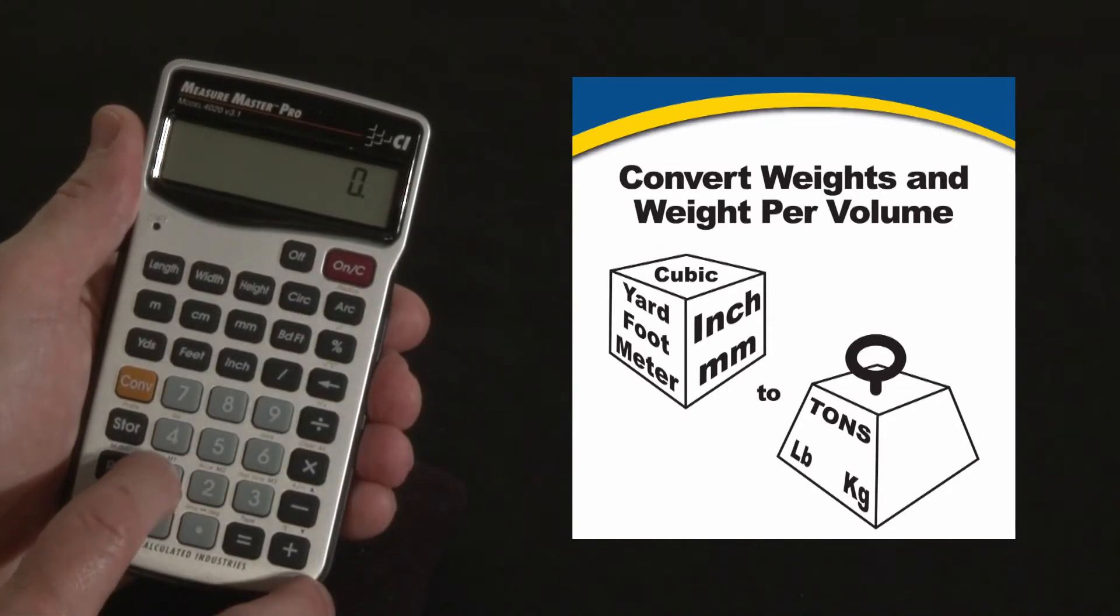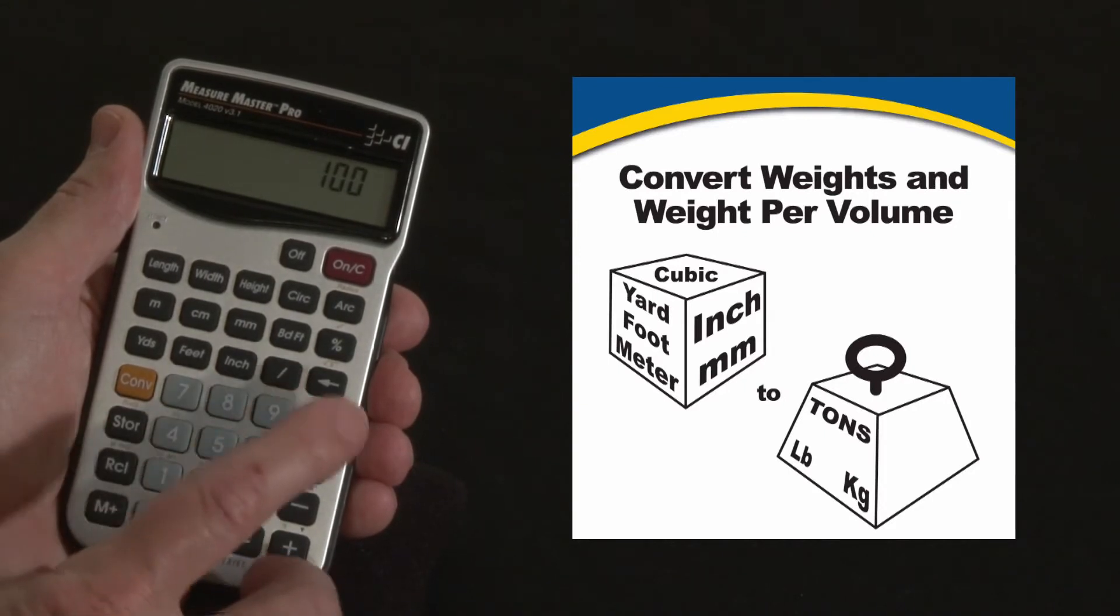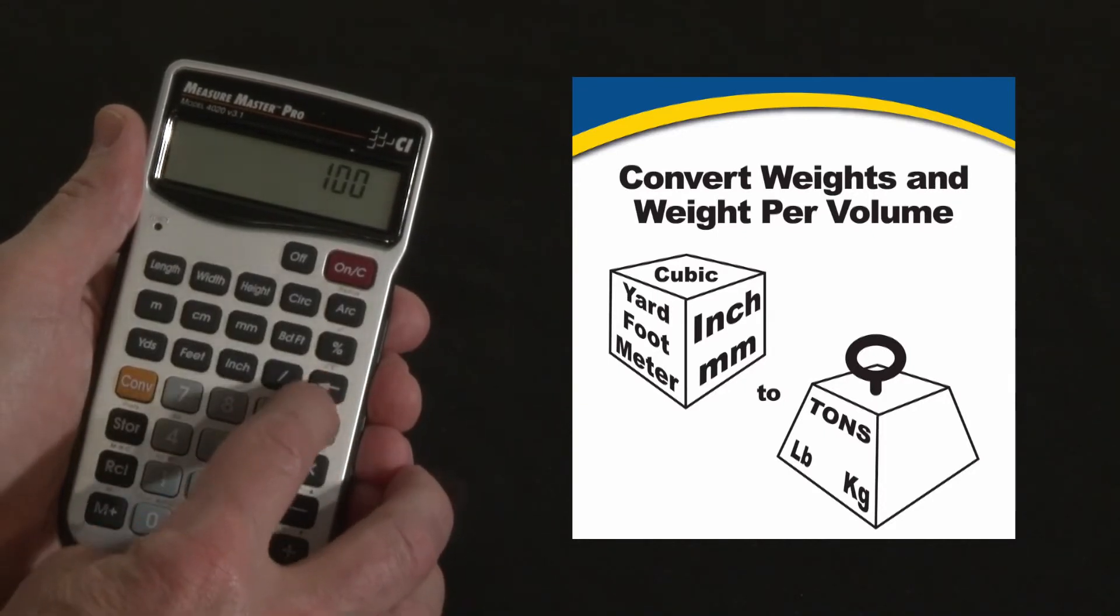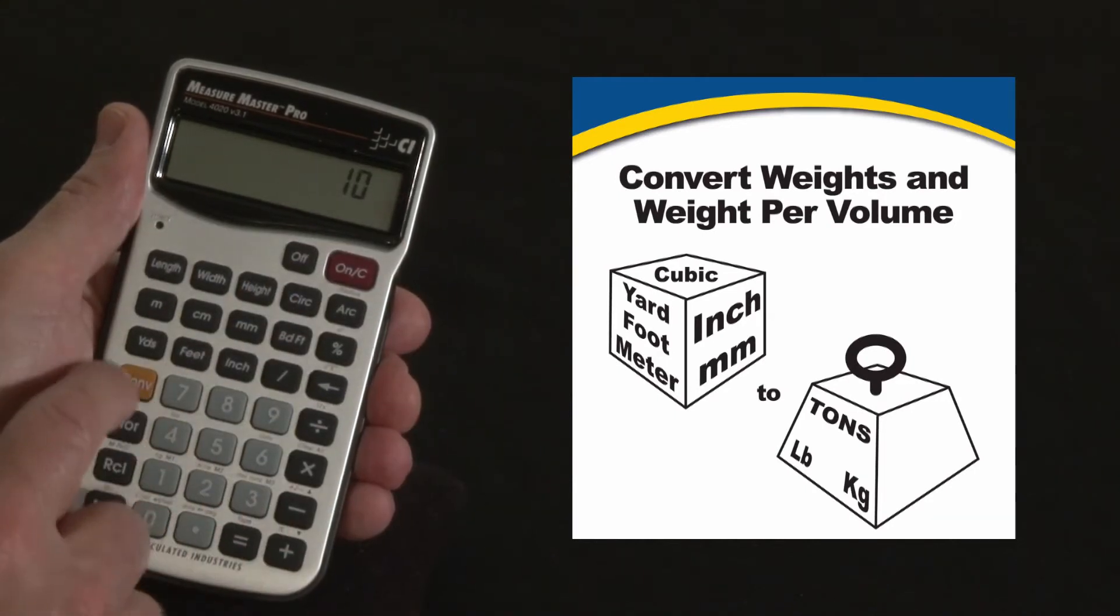So let's just put in a quantity of 100. That might be a bit much. Let's back up using the backspace key. You can back digits out one at a time. Let's go 10 cubic yards.